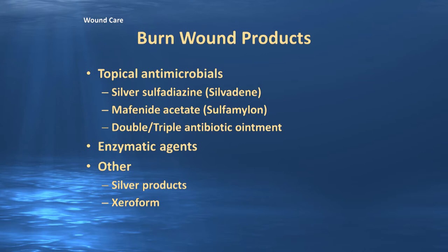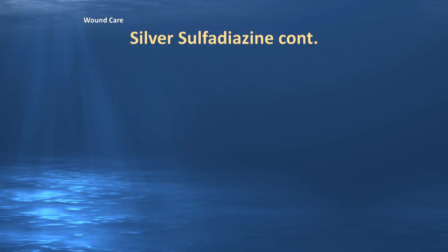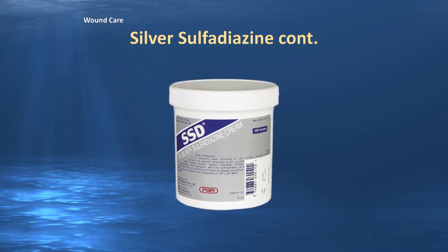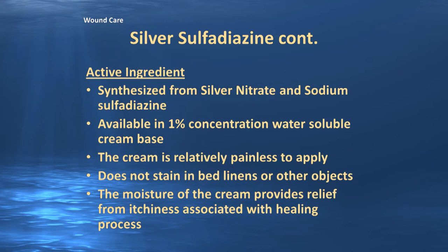Other products include silver products — the newer nanotechnology items — which are not readily found in your cache, and Xeroform, which you will have and will utilize extensively. Silver sulfadiazine (Silvadene) used to be known as the gold standard for wound care and is now generally used for deeper third-degree burns and those with leathery eschar. Its active ingredient is synthesized from silver nitrate and sodium sulfadiazine, in a 1% concentration water-soluble cream base. It is relatively painless to apply, does not stain bed linens, and the moisture of the cream provides relief from itchiness associated with wound healing.